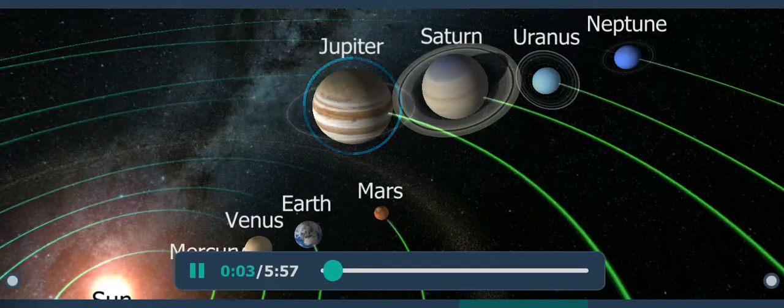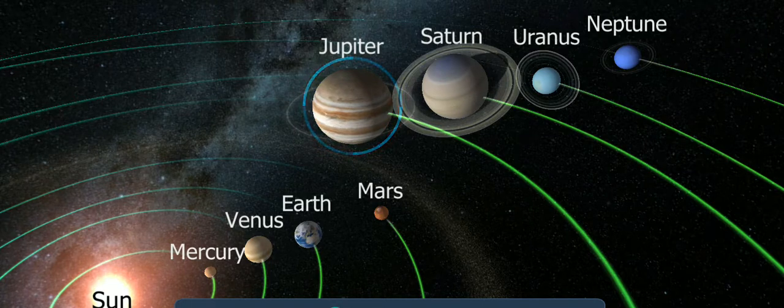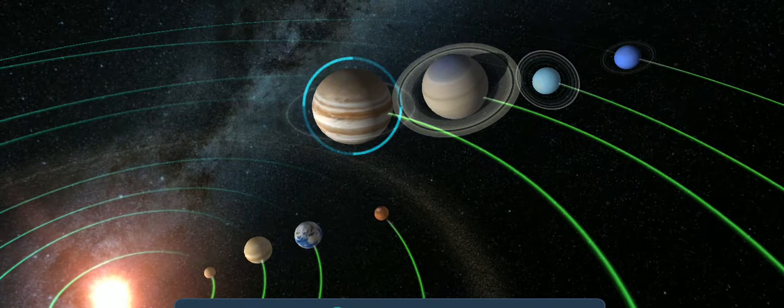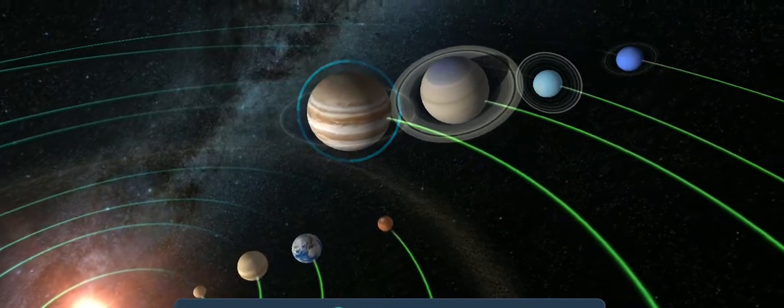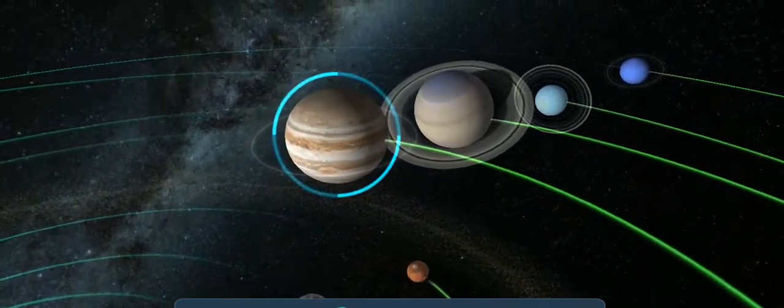Apart from the sun and the moon, Jupiter is the brightest celestial body after Venus. It was named after the chief god of Roman mythology, who was the god of the sky, daylight, and storms, as well as the king of the gods.